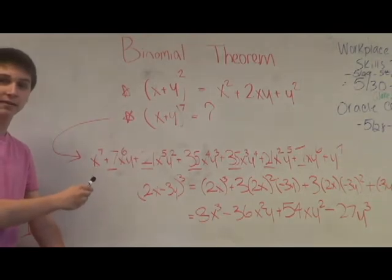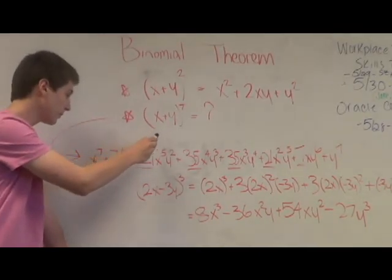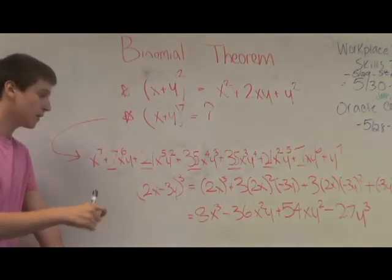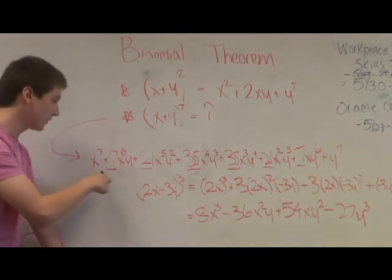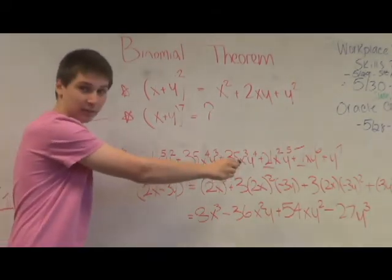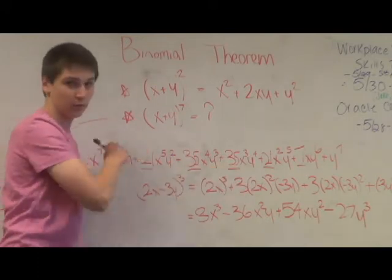Now the pattern of building these, the exponents of each term from the original binomial follow a unique pattern. Now the first term is going to start at the degree that you're multiplying it of and decrease as you go along the expanded pattern. So it goes 7, 6, 5, 4, 3, 2, 1 as you go along down the line.